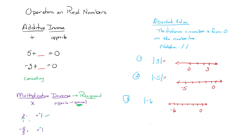Additive means addition. Inverse means opposite. So if I want the additive inverse of 5, that means I'm going to take 5 and ask: what can I add to it to make it cancel out, to make it equal 0? The opposite of positive 5 is negative 5, and positive 5 plus negative 5 equals 0.